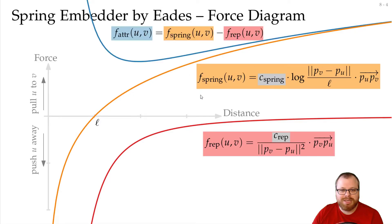And the resulting attractive force looks like this. In the beginning it is very huge to counteract the repulsive force, and then it gets closer and closer to the spring force as the repulsive force gets close to zero.